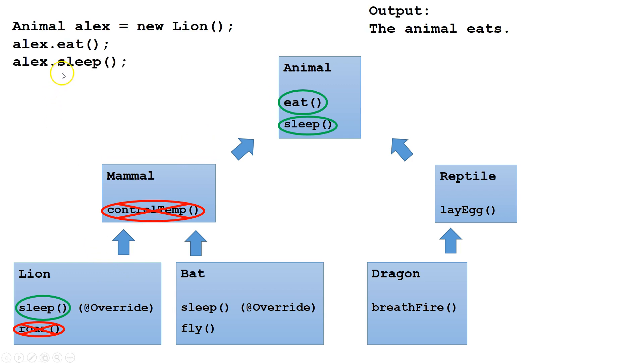Imagine we called the method sleep. Sleep exists in the Animal class, however it was overridden in the Lion class, and since alex is pointing to an instance of Lion, we will use the overridden version of the sleep method.